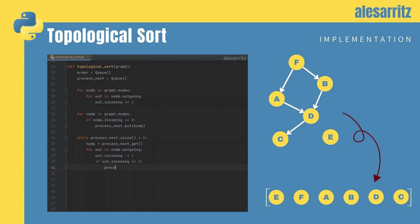After that, we check if the counter is now equal to zero, and in that case, we add it to ProcessNext.